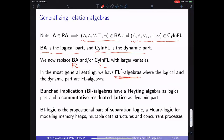Bunched implication algebras, or BI algebras, coming from bunched implication logic, take a Heyting algebra as the logical part and a commutative residuated lattice as the dynamic part. BI logic is the propositional part of separation logic, which has been studied for 20 years and is extremely successful for modeling memory heaps, mutable data structures, and aspects of concurrent processes.